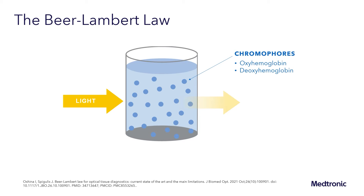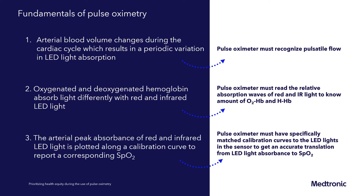There are three fundamentals of pulse oximetry which we'll discuss in detail as we move through the program. The first is that arterial blood volume changes during the cardiac cycle result in a periodic variation in the LED light absorption. The pulse oximeter must recognize pulsatile flow, or it's unable to measure oxygen saturation.